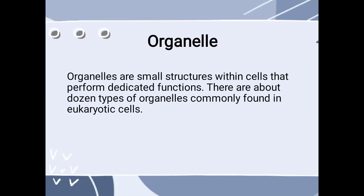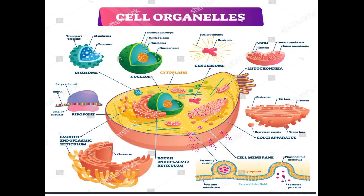First of all, let us know what is an organelle. Organelles are actually the assemblage of biomolecules. These are microscopic structures within cells that perform specific functions. If we talk about the number of organelles within a eukaryotic cell, then there are about a dozen types of organelles commonly found in eukaryotic cells.